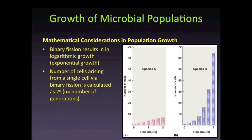Following binary fission, one bacterial cell will yield two. Those two bacterial cells may then undergo binary fission to yield four, those four to yield eight. Thus the number of bacterial cells doubles with each round of binary fission. This type of reproduction is referred to as logarithmic or exponential growth. The number of cells arising from a single cell that reproduces via binary fission is calculated as two to the power of n, where n is the number of generations.